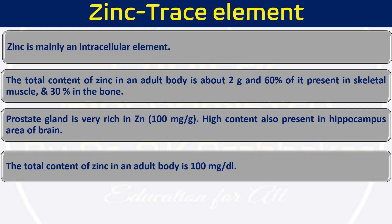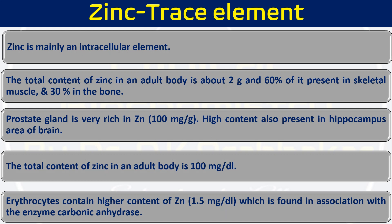The content of zinc in erythrocytes (RBCs) is roughly 1.5 mg per dL, which is associated with the enzyme carbonic anhydrase. Carbonic anhydrase is responsible for the conversion of carbon dioxide and water into carbonic acid, and then it will dissociate. So carbonic anhydrase is one of the enzymes that requires zinc for its function, and the major source of carbonic anhydrase is RBCs. That's why RBCs have a high content of zinc.